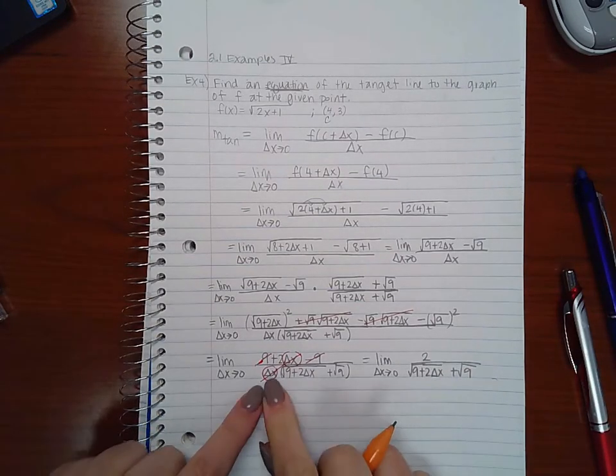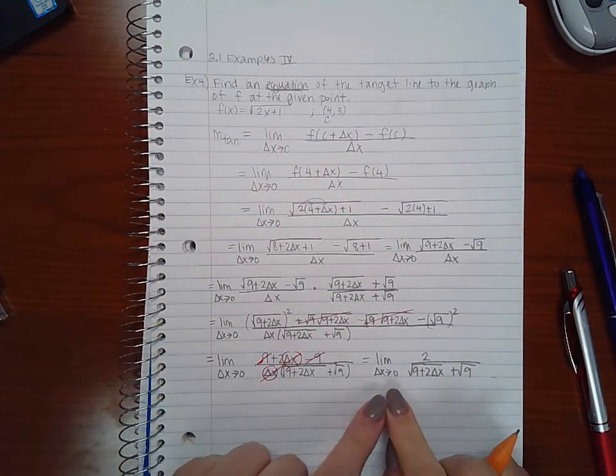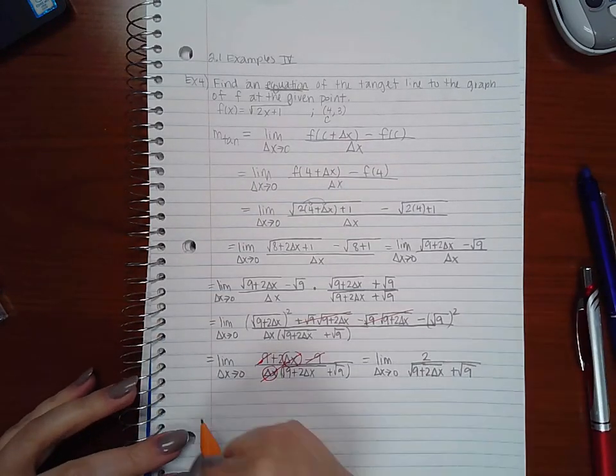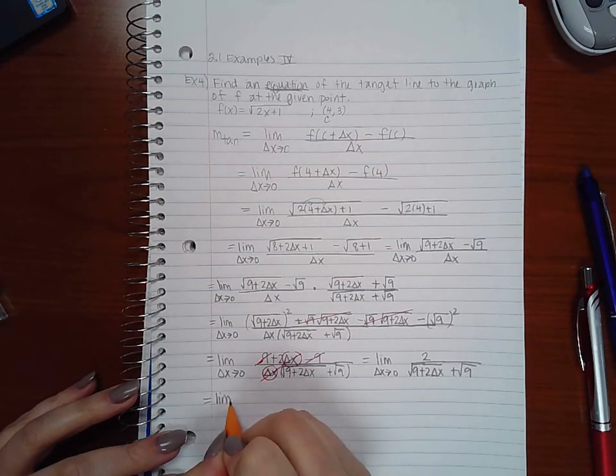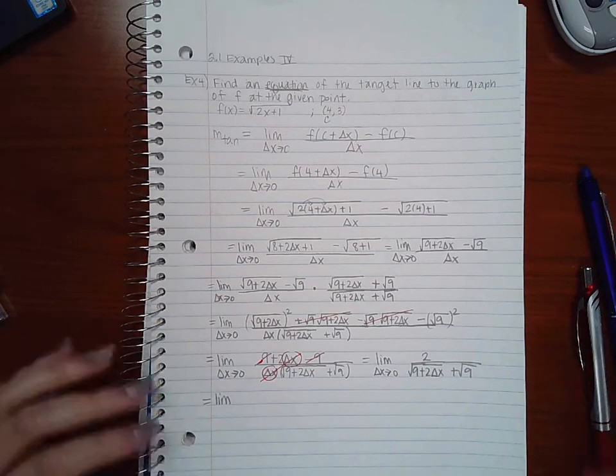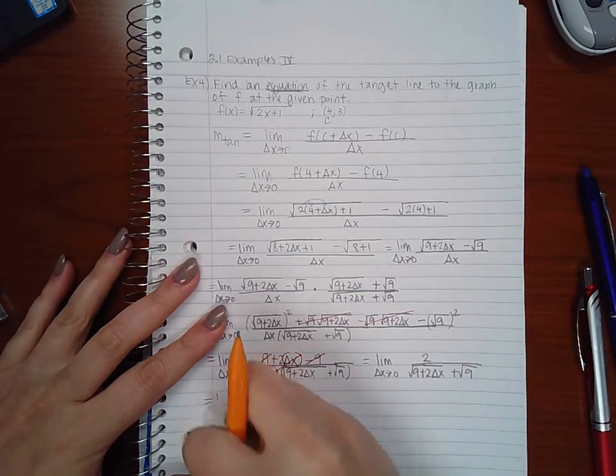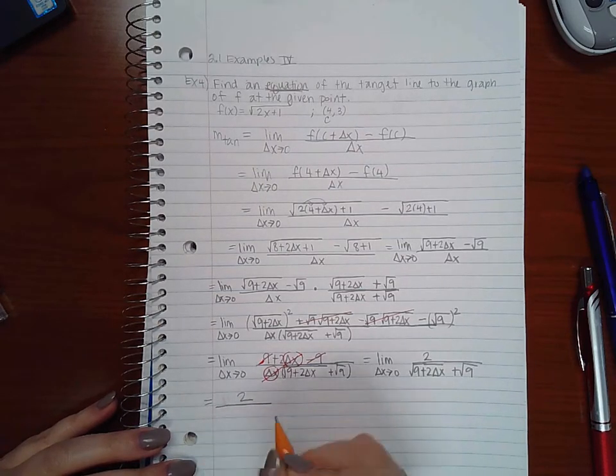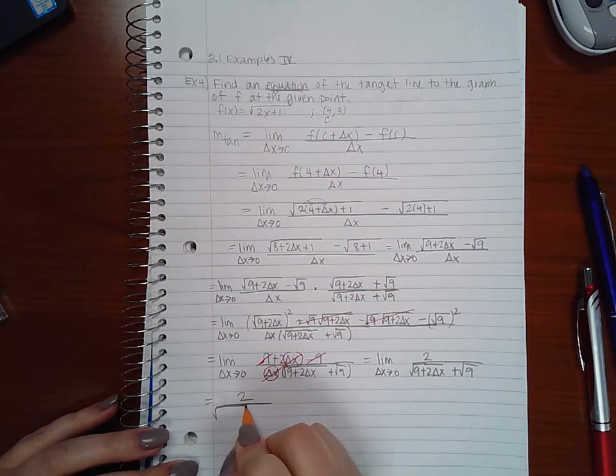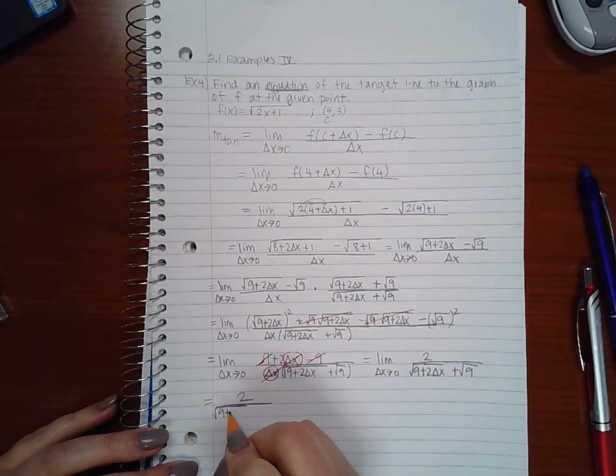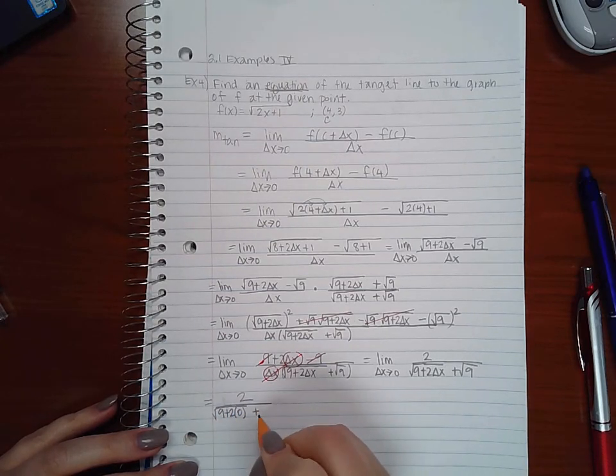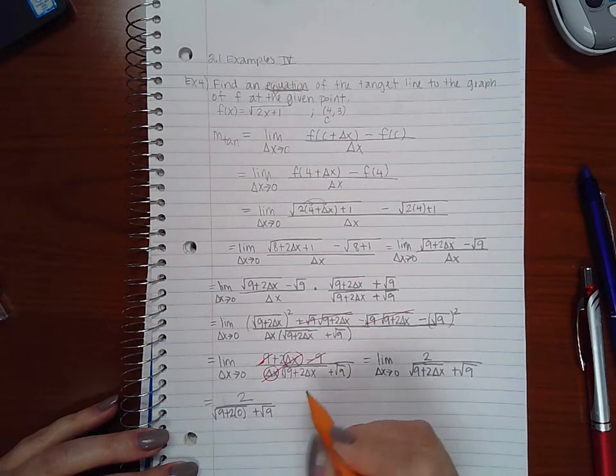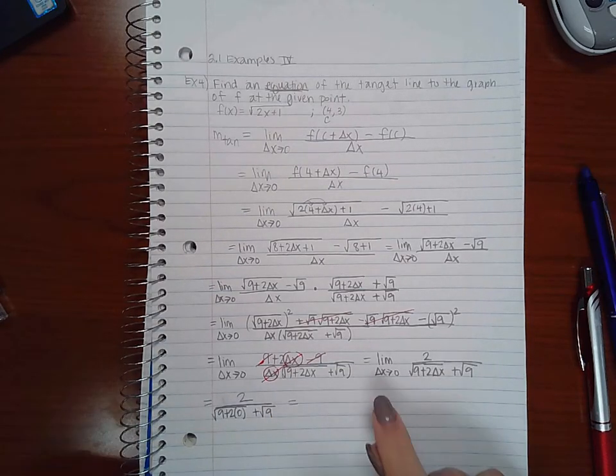And now that I don't have that delta x factor there anymore, we can direct substitute to calculate this limit. Oops, I don't need to write limit anymore once I'm plugging in the number. That is a common mistake that does get points taken off when you're taking a test.